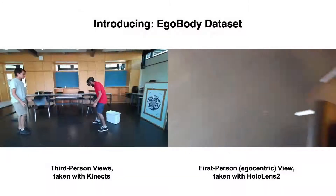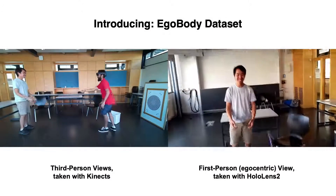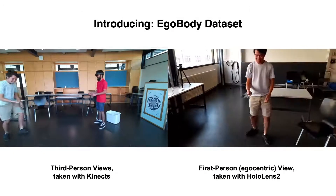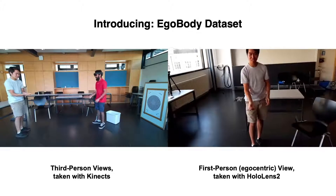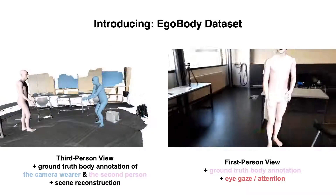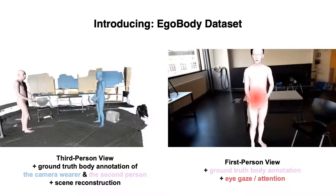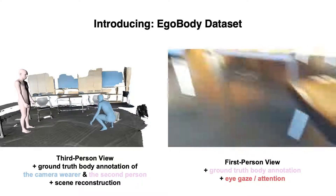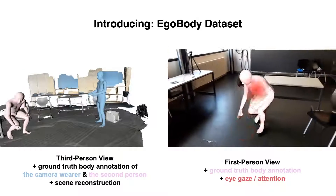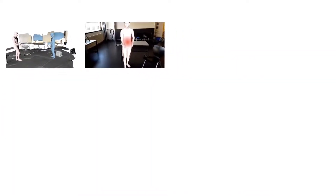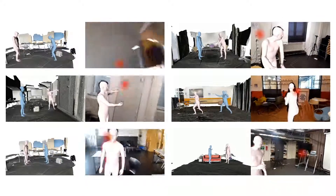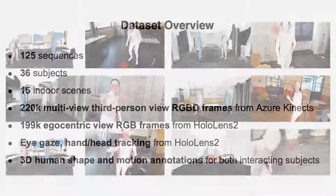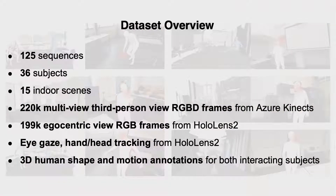To fill this gap, we propose EgoBody, a large-scale egocentric dataset for 3D human motions during social interactions in complex 3D scenes, with multiple synchronized data modalities for both the egocentric and the third-person view. Furthermore, we provide accurate 3D human shape and motion annotations in the reconstructed 3D scenes with eye-gaze tracking from HoloLens 2. To encourage rich body motions, we define social interaction scenarios given a classification from sociology studies spanning diverse action types. The dataset includes 125 sequences with 36 subjects in multiple 3D indoor scenes.